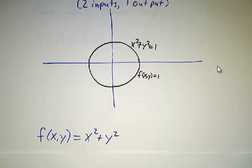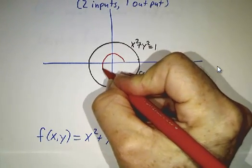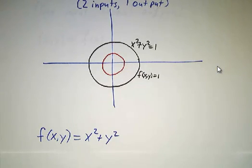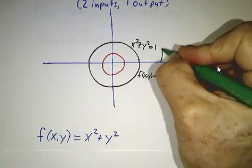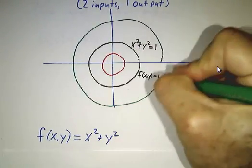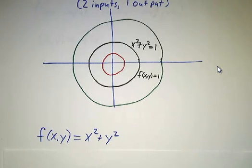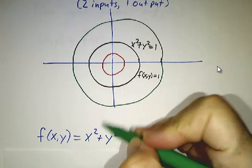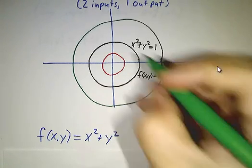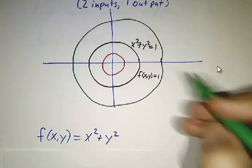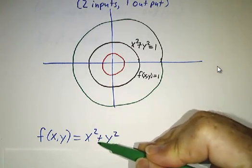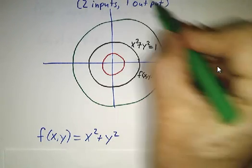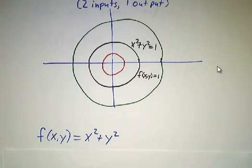Now, if you looked at all the points where f of x, y was a quarter, you'd get a different circle. If you looked at all the points where f of x, y was four, you'd get a different circle. So each of these circles is described by the same function. If you set this function equal to your favorite number, you'll get a certain set of points in the plane.